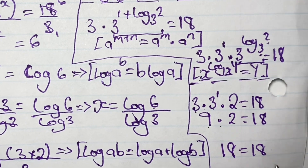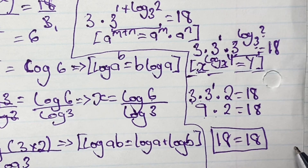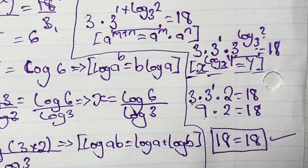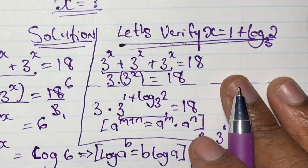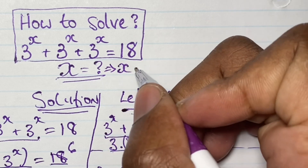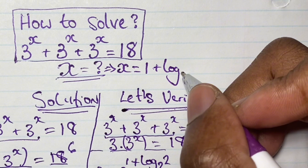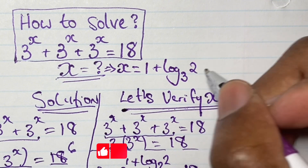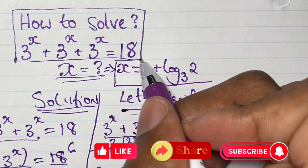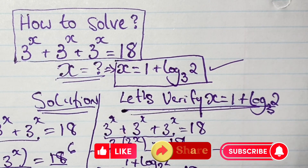So my solution of x is verified. Please remember to check out my playlist on how I solve other algebra exponential equations. So x indeed equals 1 plus log base 3 of 2. If you like this video, please smash that like button, give me a subscribe, and I'll see you in the next video. Thanks again for watching and take care.